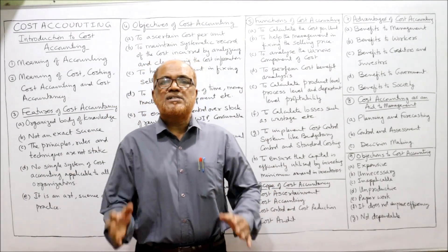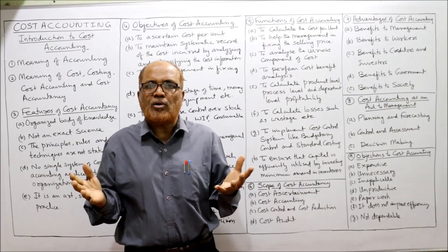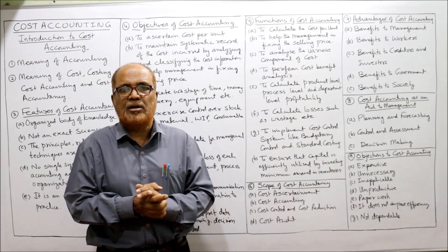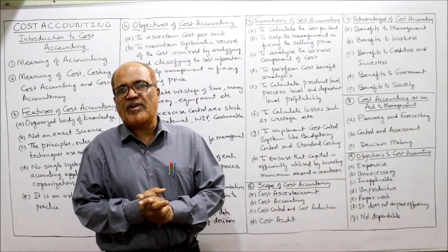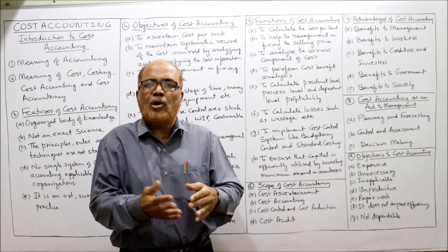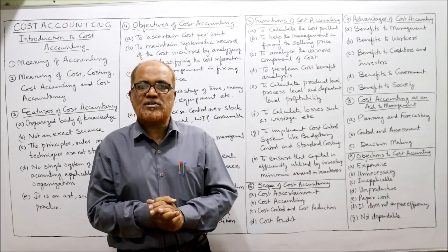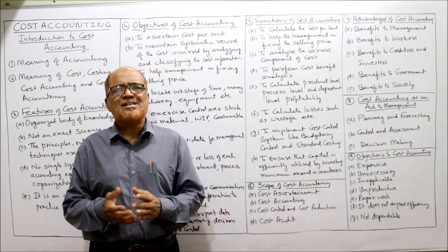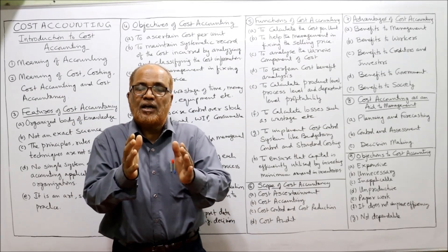Objections against cost accounting: some people argue that cost accounting is a waste of time, money, and effort, and that it is not necessary. These are the objections, but they are not true. For example, some argue it is expensive — since financial accounting already exists for recording, having another accounting system causes duplication of work, clerical work, paperwork, and resource use. However, if you compare the benefits, they exceed the cost — it is not expensive.